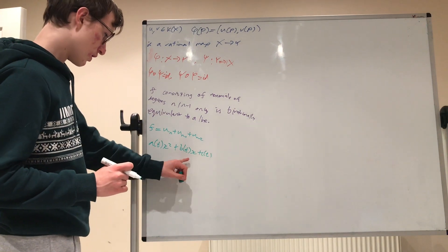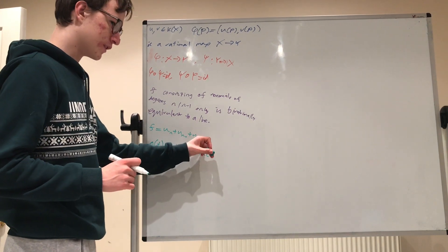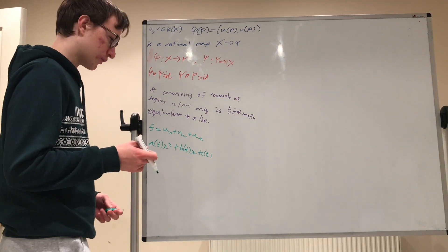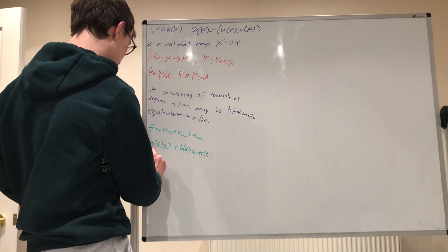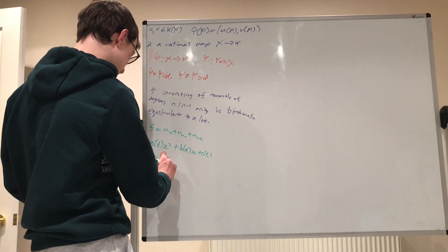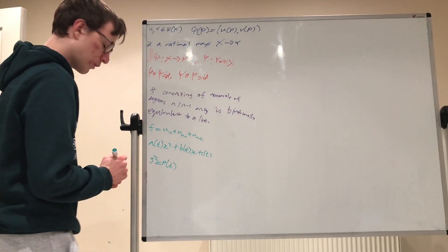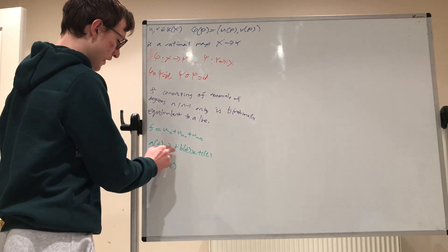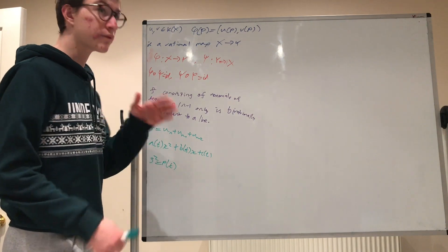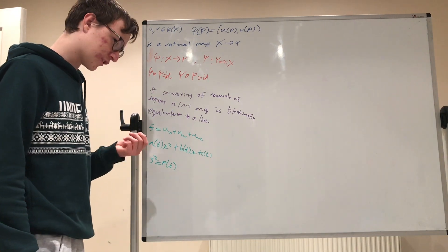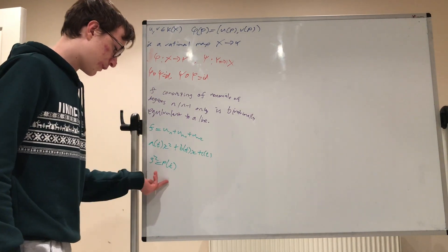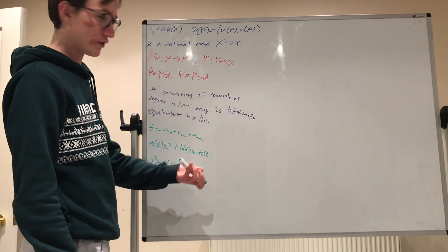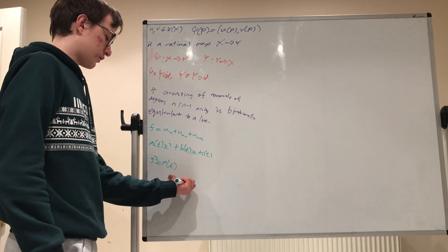And so our thing is birationally equivalent to, completing the square, something of the form s squared is equal to p of t. Now, what's s? Well, completing the square, we have s equal to 2ax minus b, of course assuming we're not in a field of characteristic 2, and p is equal to b squared minus 4ac.